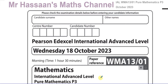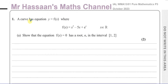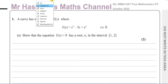So that's the main reasoning behind me doing these questions. I'm going to start with question number one. Question number one says: a curve has equation y equals f of x, where f of x equals x squared minus 5x plus e to the power of x, where x is an element of the real numbers. Show that the equation f of x equals zero has a root alpha in the interval one, two.